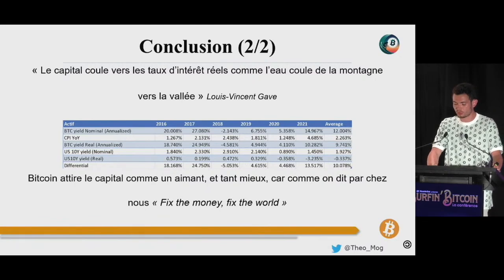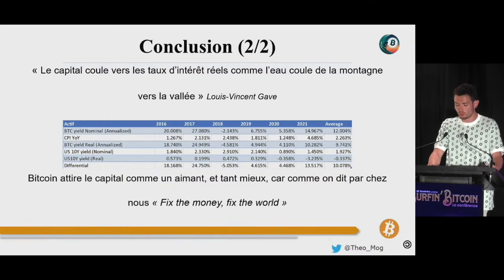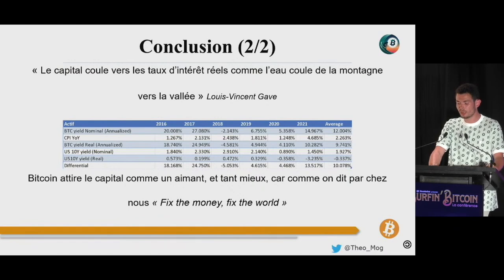Je sais que ces calculs peuvent vous paraître obscurs, en réalité ils sont très importants. Tous les systèmes financiers et monétaires du monde sont en concurrence perpétuelle pour attirer du capital. Le déterminant principal de cette lutte, c'est le taux d'intérêt réel. Comme le dit parfaitement Louis-Vincent Gave, le capital coule vers les taux réels positifs comme l'eau coule de haut en bas de la montagne. Bitcoin présente des taux réels inégalés à l'époque moderne et inégalables compte tenu du surendettement généralisé de nos économies. On peut donc s'attendre à ce qu'il attire du capital comme un aimant au cours des années qui viennent.